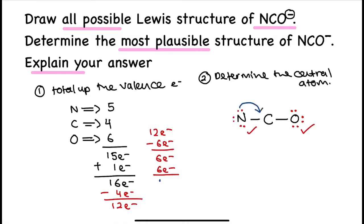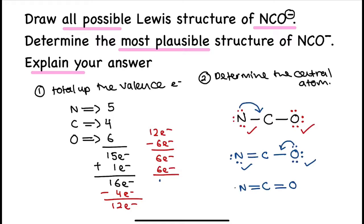First, let us try converting the lone pairs on nitrogen into bonding pairs. That would give us a structure where nitrogen is octet and oxygen is octet, however carbon is still not octet. So let's convert another two lone pairs from oxygen into bonding pairs, giving us carbon double bonded to oxygen and double bonded to nitrogen. Don't forget to draw out the lone pairs on each terminal atom. This gives us a complete Lewis structure of NCO⁻ — represent it with a square bracket and a minus charge on top.